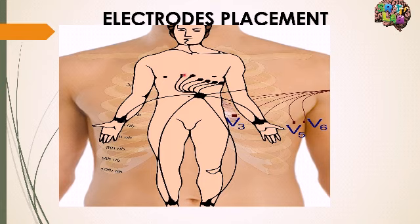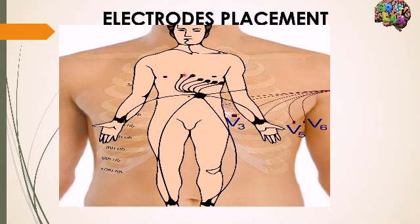For the chest, C1 is placed at the fourth intercostal space at the right edge of the sternum. The sternum passes at the midline of the body, so here is the right edge. The fourth intercostal space is at the same level as the nipple.